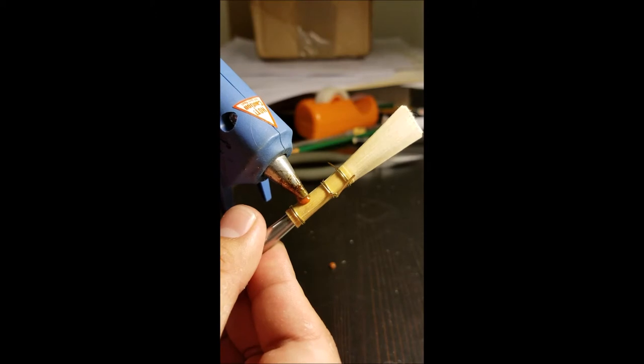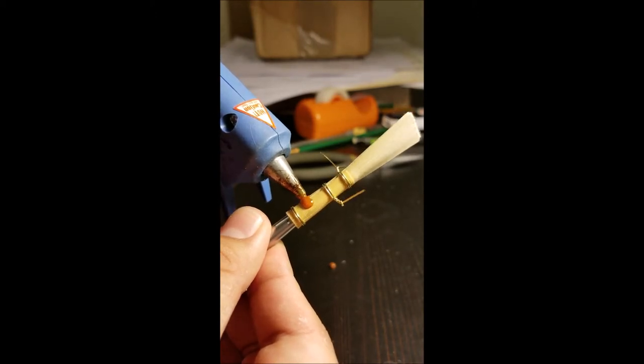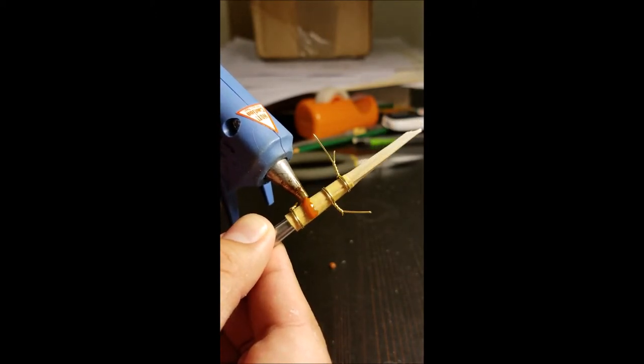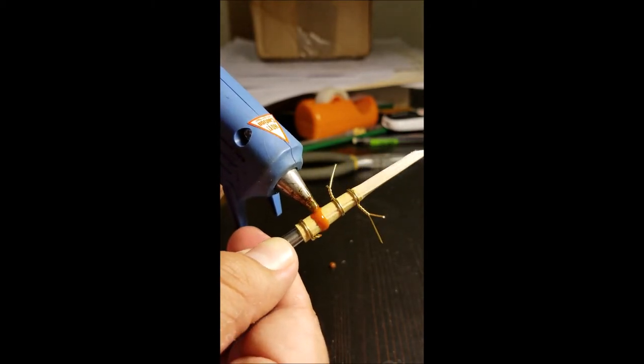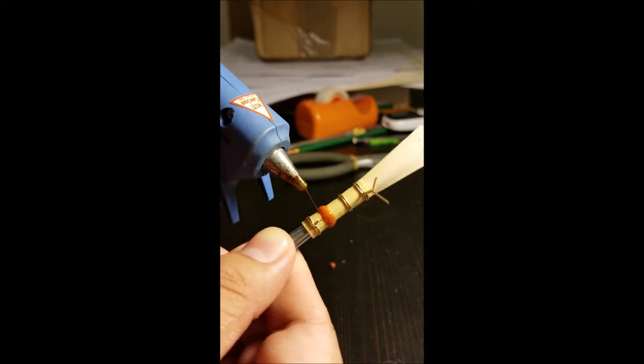When you're using horizontal bands, you want to start from the top and then go slowly in a horizontal band. Make sure not to pull the trigger too far so that there isn't too much glue coming out.